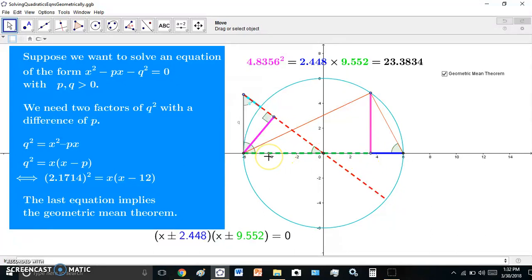This here would be one of the solutions, the green value, which is 9.552, and the other one would be the blue line, which is 2.448. And of course, the square of the magenta line will equal to this product.